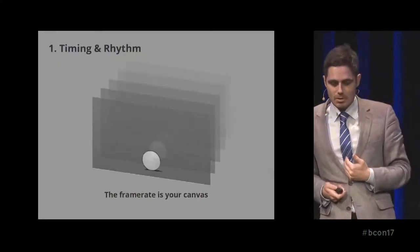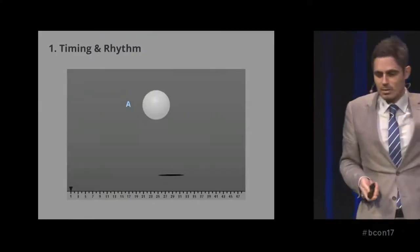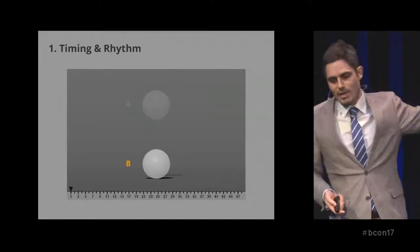First: timing and rhythm. Just like a painter or illustrator has a canvas measured in centimeters or pixels, we have that too — but the frame rate is also our canvas, adding another dimension. Due to legacy reasons, 24 frames per second has become the standard. If you're learning animation, I'd recommend starting there. Let's do the boring thing: a bouncing ball. We'll have an A and a B — an up and a down.